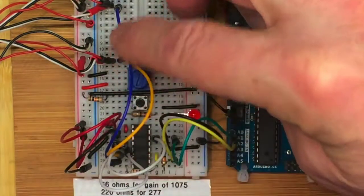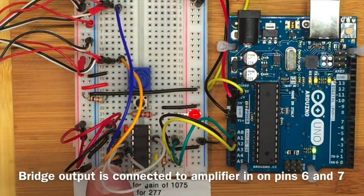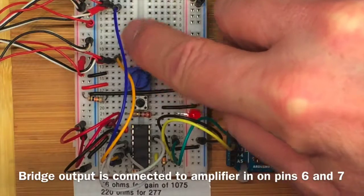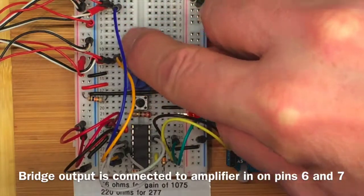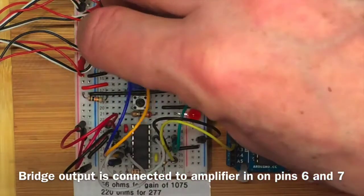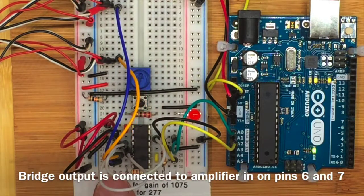The orange and blue wires here connect the bridge over to the amplifier. The orange one I've measured with my multimeter and I know it's a bigger voltage than the blue one. It's more positive. So it goes to pin 6, the positive input line. The blue one goes to pin 7, the negative input line.